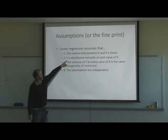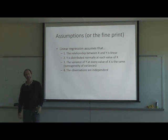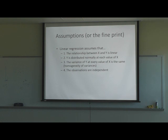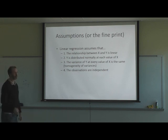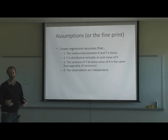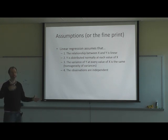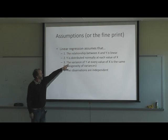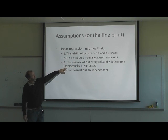Linear regression assumes the relationship between X and Y is linear. In practice, alpha and beta are unknown and must be estimated as A and B. Y is distributed normally at each X value, the variance of Y at every value of X is the same — that's homogeneity of variances — and the observations are independent. You have a normal distribution of Y values around every point on the regression line.